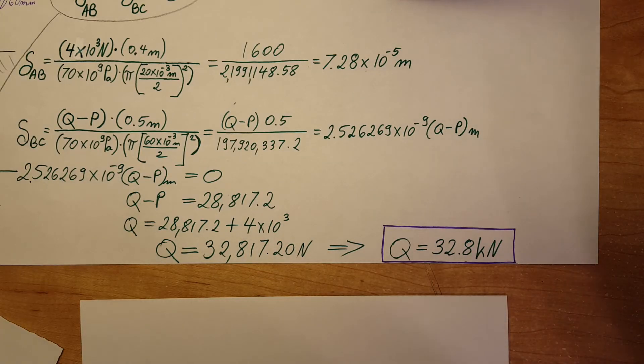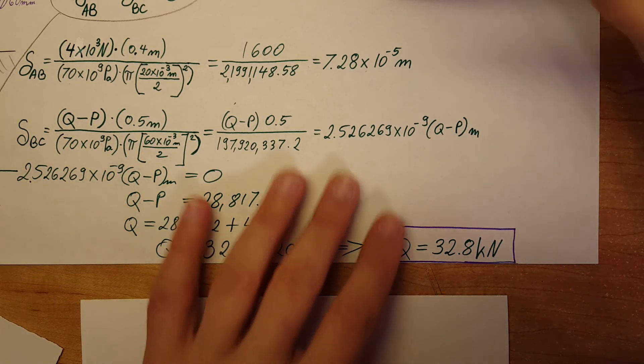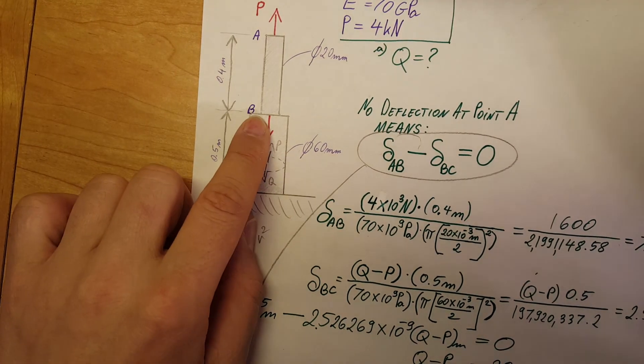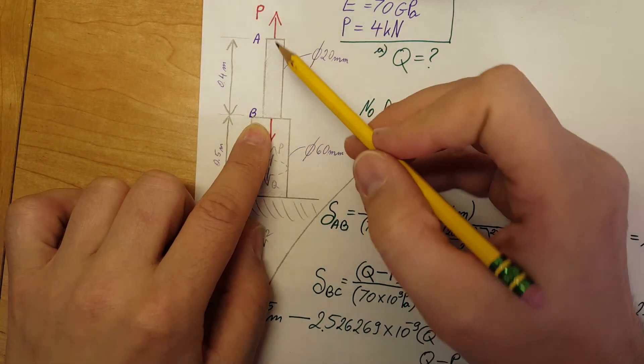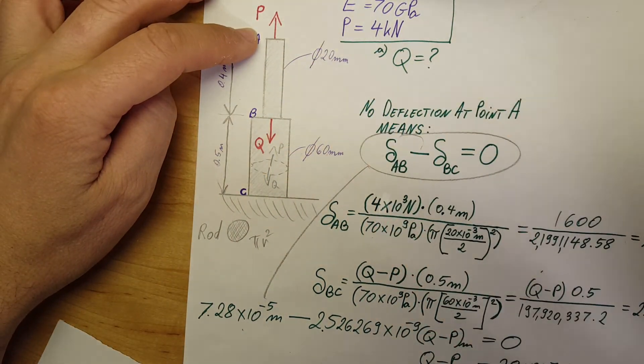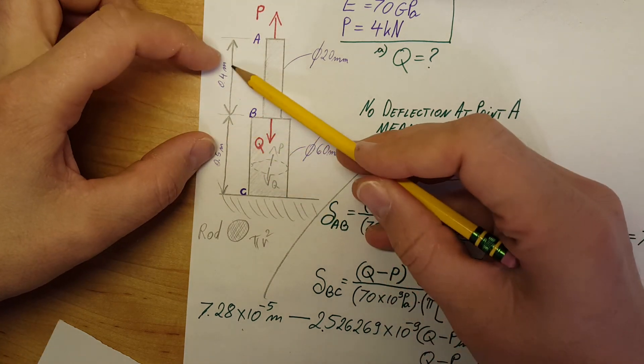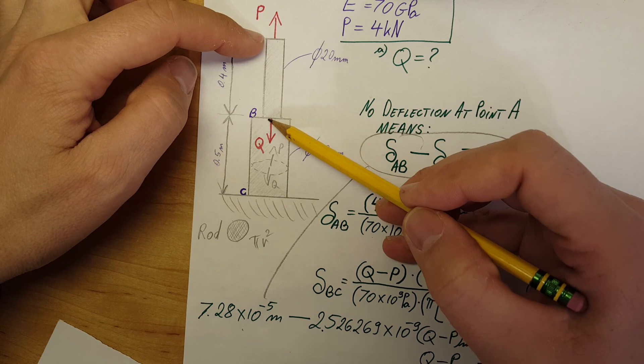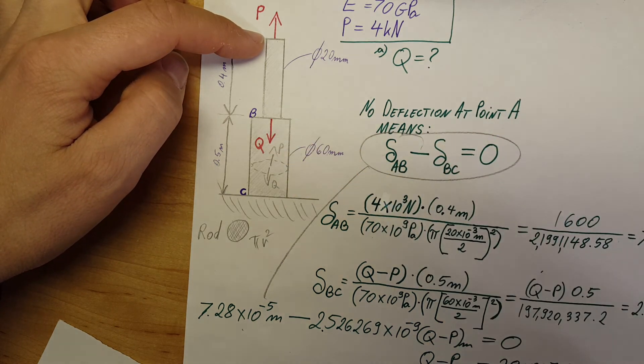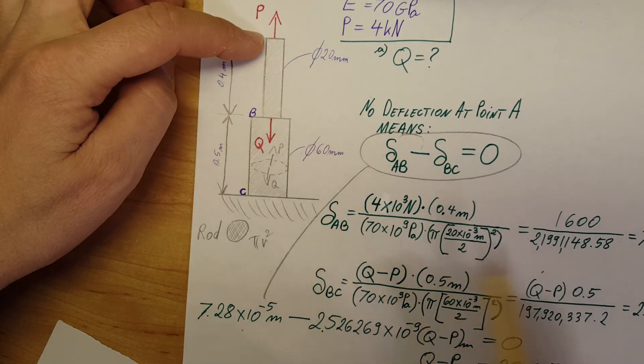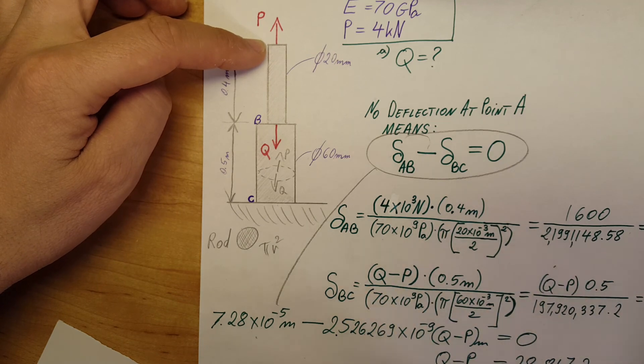In part B, what they want us to find is the corresponding deflection for point B. We know A is not moving, it stays at 0.9 meters, but point B will be displaced.